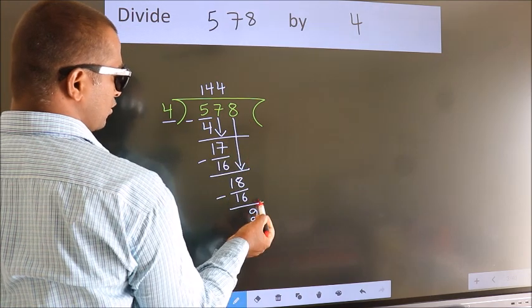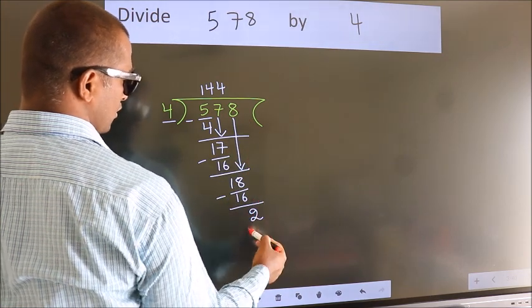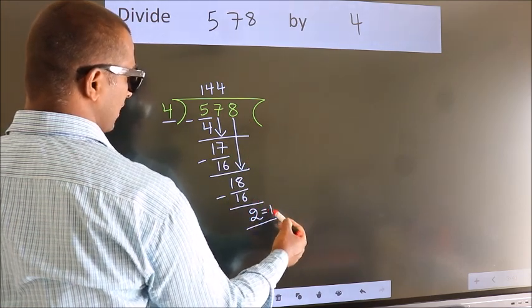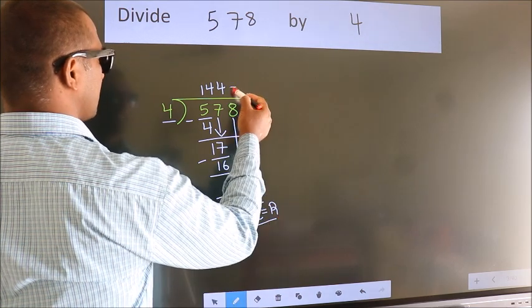No more numbers to bring it down. So we stop here. This is our remainder. This is our quotient.